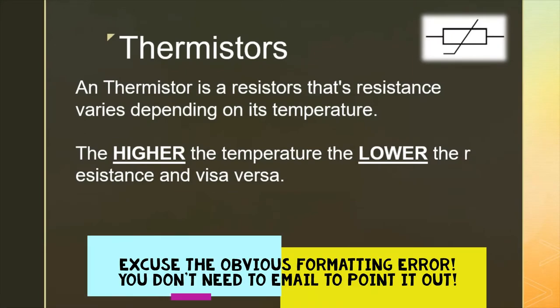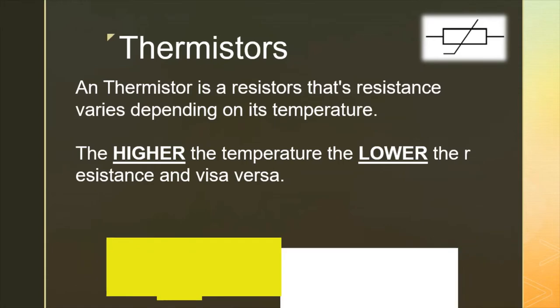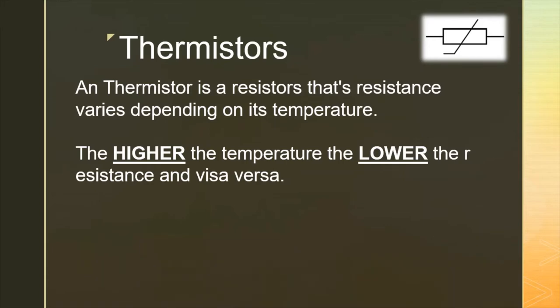The next component is the thermistor. A thermistor is a resistor whose resistance varies depending on its temperature. With most pieces of metal, as temperature increases the lattice of vibrating ions through which electrons have to move vibrates more, making it more difficult for those charge carriers to traverse the metal — so the higher the temperature, the higher the resistance. But with a thermistor it's the opposite: the higher the temperature, the lower the resistance, and vice versa. That's because as temperature increases, the number of free electrons increases. You just need to remember that as temperature goes up, resistance comes down.